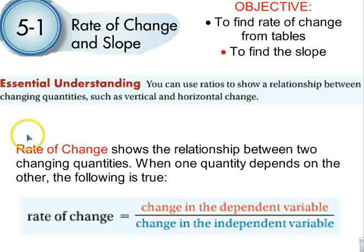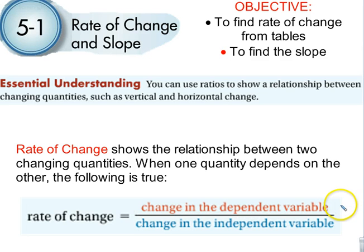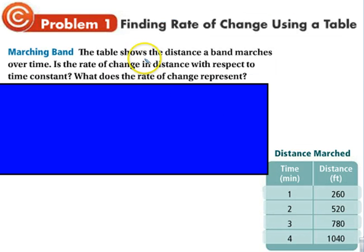Read the essential understanding: definition of rate of change — change in the dependent variable over change in the independent variable. Remember, the dependent is Y and the independent is X, because whatever we plug in for X tells us what we get for Y.